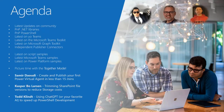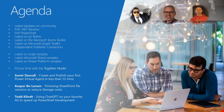Today we'll go through updates across different projects, look at the latest on the sample sites, and take a group photo. Then Samir will create and publish a Power Virtual Agent in less than 15 minutes, Kasper Poo Larsen will cover trimming SharePoint file versions to reduce storage costs, and Todd will show using ChatGPT or your favorite AI to speed up PowerShell development.